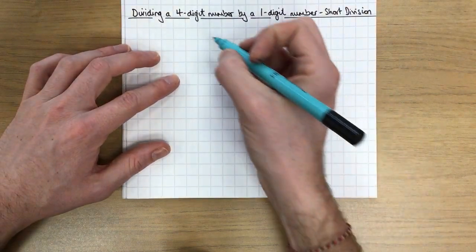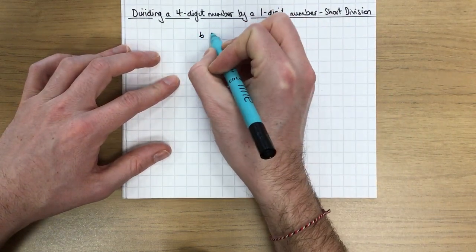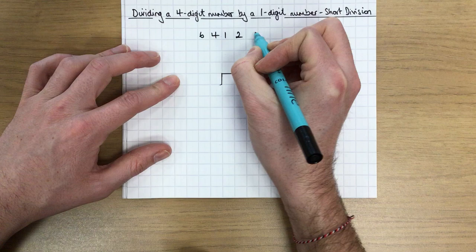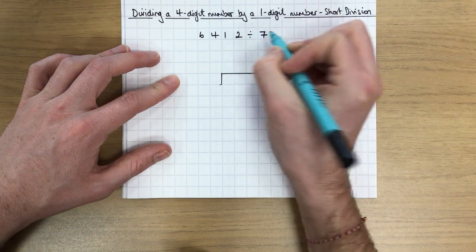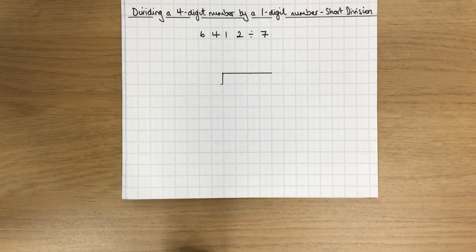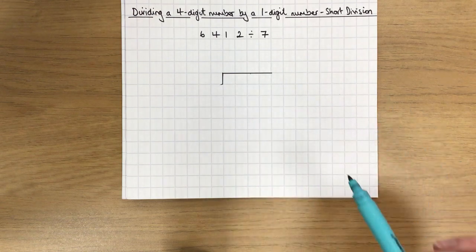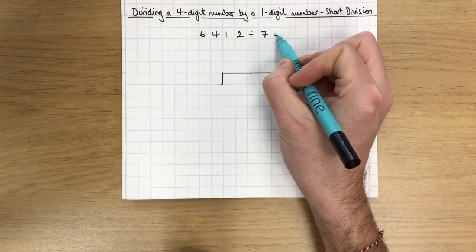This calculation is going to look at how we divide 6412 by 7. Before I have a go at the calculation, I'm going to estimate what I think the answer is going to be.